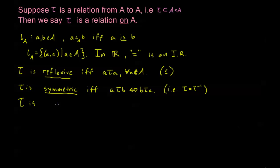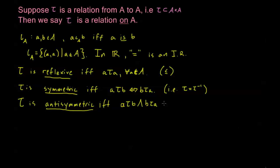Tau is called antisymmetric if and only if having both A tau B and B tau A only happens when A equals B. For example, less than or equal to is antisymmetric: if A is less than or equal to B and B is less than or equal to A, then A and B must be the same number. That's the only way this relationship works in both directions.